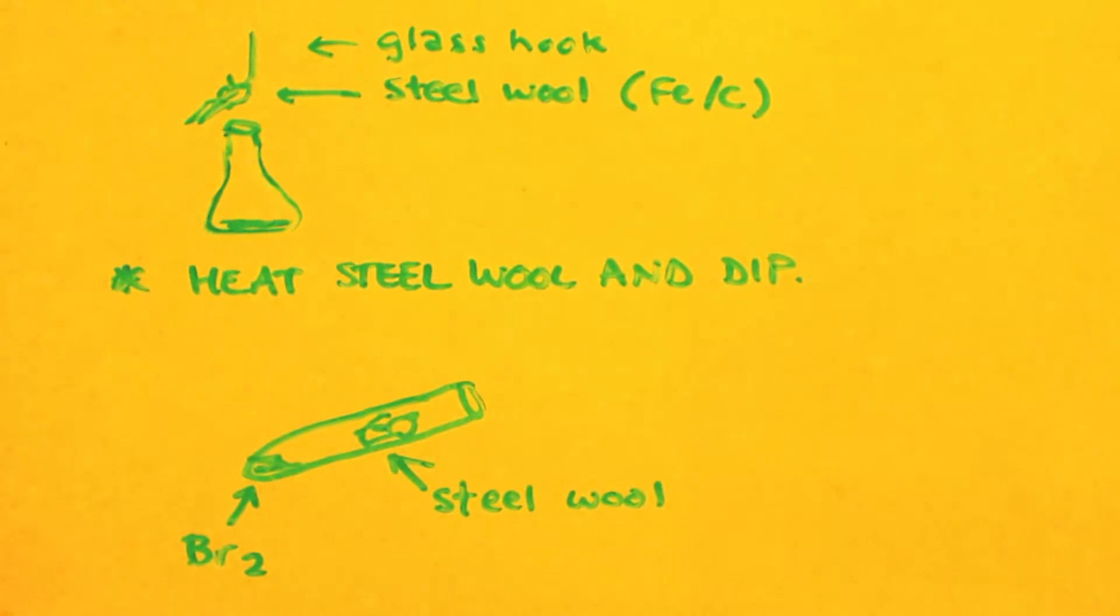Keep in mind, I've never made iron tribromide, but here's a couple of ideas on how to do it. You can see up on top there, you have a glass hook, basically get a glass rod and heat it up with a torch to make sure you have a hook on it. Hook your steel wool that you just buy at the supermarket or whatever. And that's basically just iron and a little bit of carbon in it. Heat it up and see the flask there. The flask has just, you only need a little bit of bromine. Heat it up.